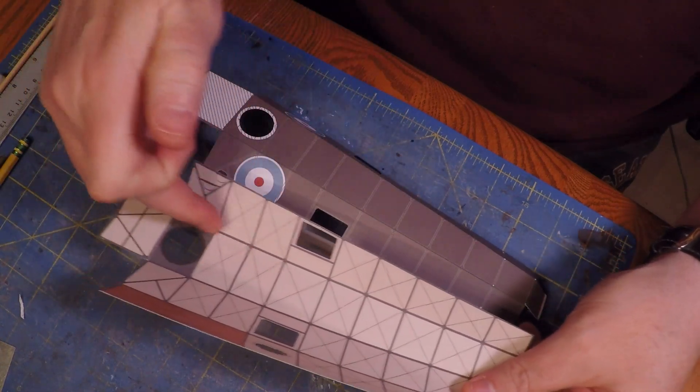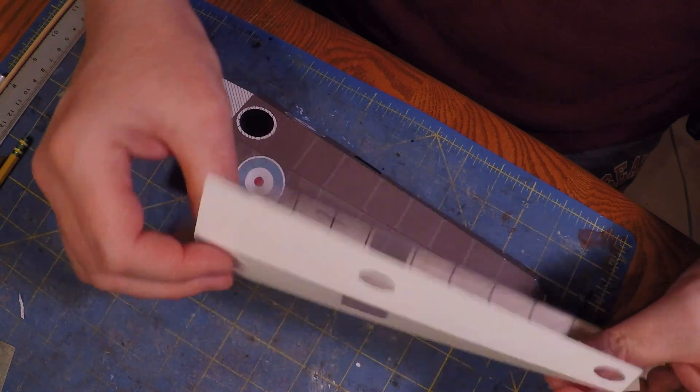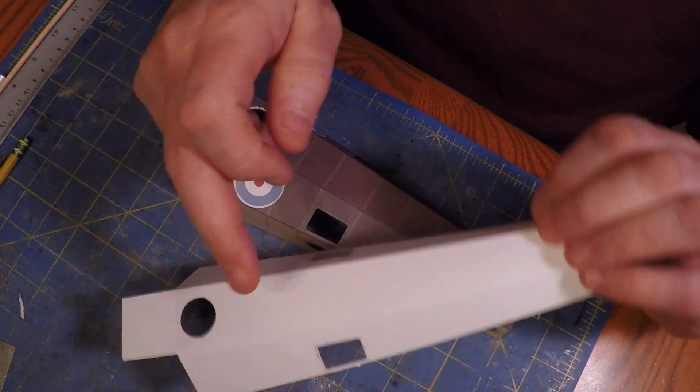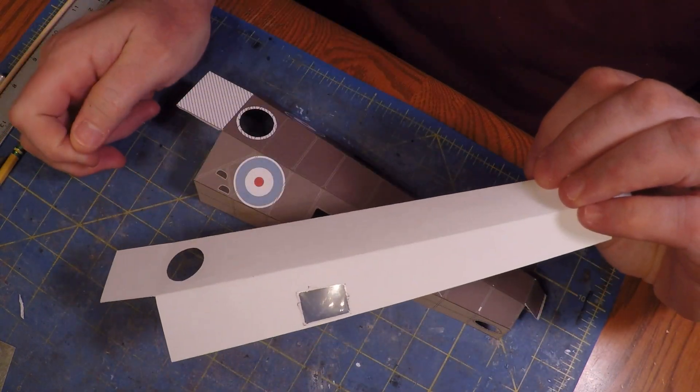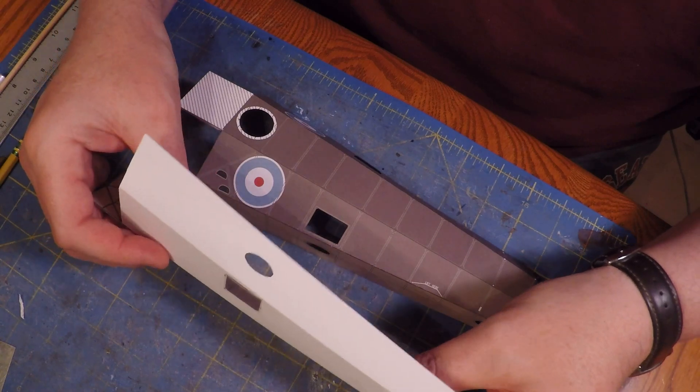There's a rear cockpit where a gun will go on top at some point. All that is done beforehand, then I put windows. You can see a clear window right there that's going to get sandwiched with the outer skin to make the windows clear.